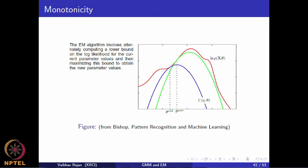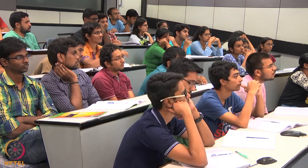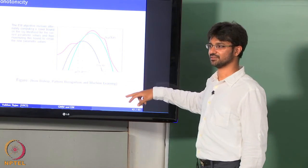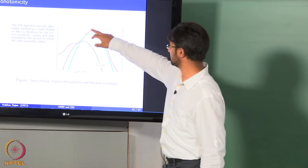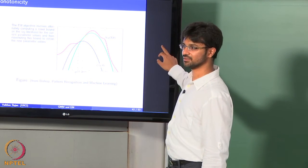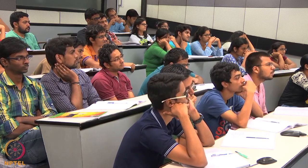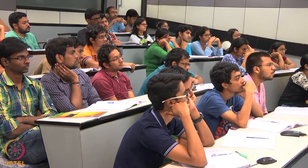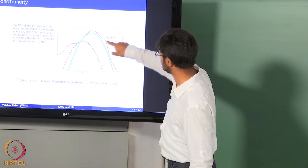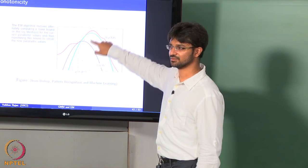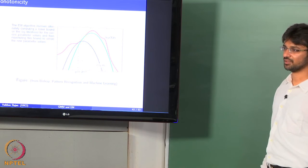Why would EM get stuck at a local optimum? Because if you reach a saddle point, the likelihood curve is not always monotone. For example, suppose the likelihood goes like this — it is not guaranteed to go up in the right direction. It will just stay in that region. This is the usual problem with optimization.